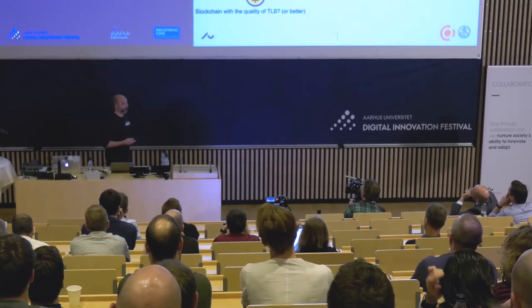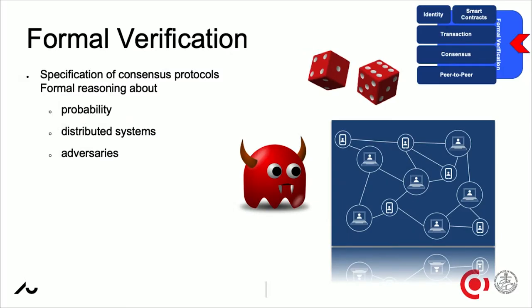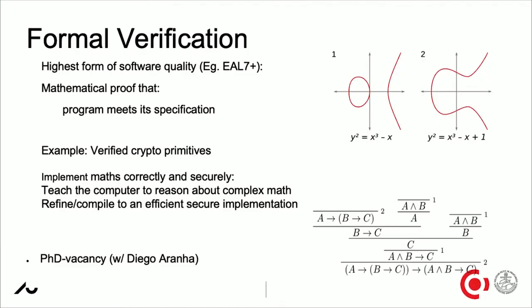What we want is a blockchain with the quality of TLS, or maybe even better. We're doing verification of the whole blockchain stack. One thing my PhD student Cern Allen Thompson is working on is verification of the consensus protocol. We now have a proof that the Concordium consensus protocol is functionally correct. The next step is to prove it's also secure, which requires reasoning about probabilities, reasoning about an attacker with a precise attacker model, and reasoning about distributed systems — all kinds of new reasoning principles.